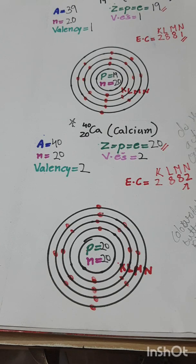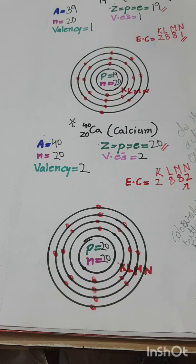I hope you understood how to draw the Bohr structures for the first 20 elements, which are very important for your course. You can also enjoy doing the activity of creating beautiful Bohr structures using different craft materials of your own choice — like colored sheets, buttons, stick bindis, stones, clay, pistachio shells, or any other craft material, as shown in the samples. Enjoy learning science — thank you for watching!